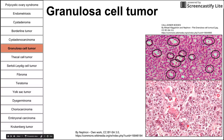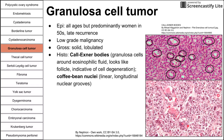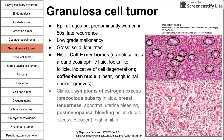Next is the granulosa cell tumor. Epidemiologically, it affects patients of all ages but predominantly women in their 50s, with late recurrence and low-grade malignancy. On gross pathology, they look solid and lobulated. Histology has characteristic Call-Exner bodies — granulosa cells arranged around eosinophilic fluid, resembling a follicle — indicative of cellular degeneration. You may also see coffee bean nuclei. Clinically, you see symptoms of estrogen excess because granulosa cells produce estrogen: precocious puberty, breast tenderness, postmenopausal bleeding, or abnormal uterine bleeding. High inhibin levels may also be seen.